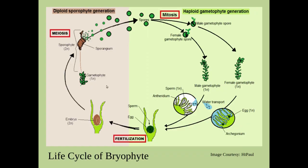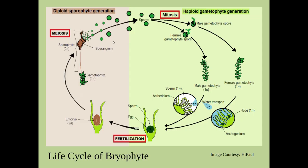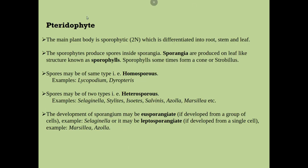Now we come to the pteridophyte. In pteridophyte, the main plant body is sporophytic. In bryophyte, the major portion of the life cycle was haploid and the haploid plant is the gametophyte. But in the case of pteridophyte, the major portion of the life cycle is sporophytic, that is diploid, and the sporophytic plant is differentiated into root, stem, and leaves.